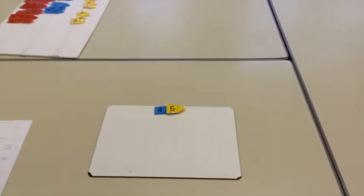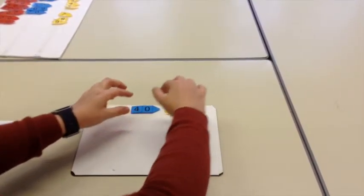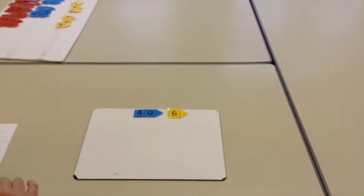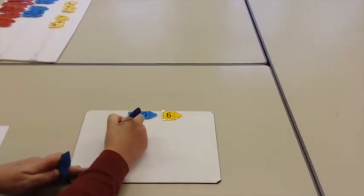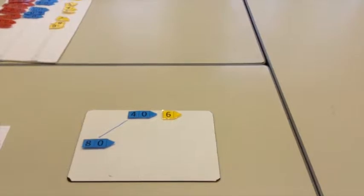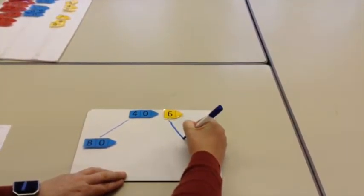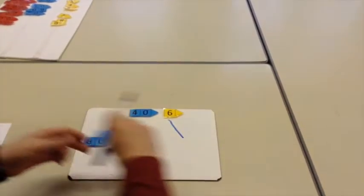First, you separate the number into tens and units. Then you double the 40. Double 40 makes 80. Then we double the 6. Double 6 makes 12.